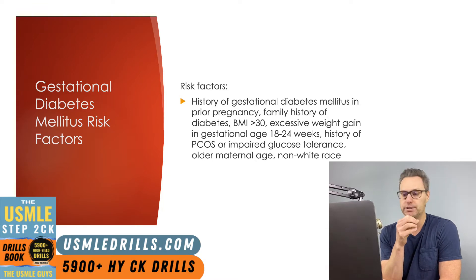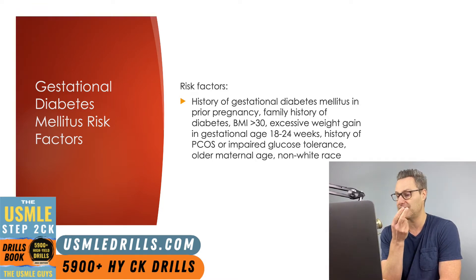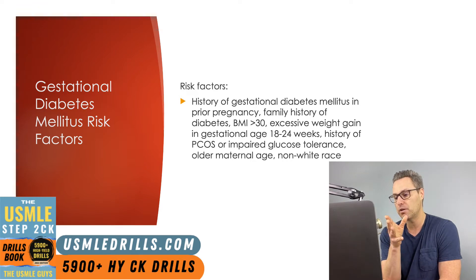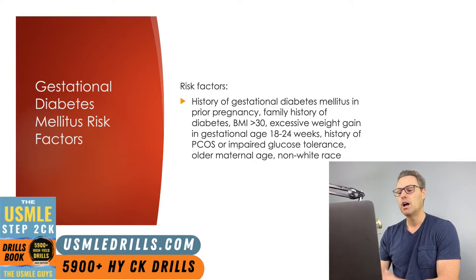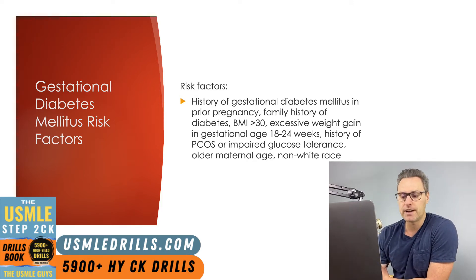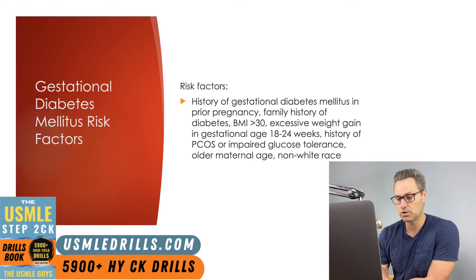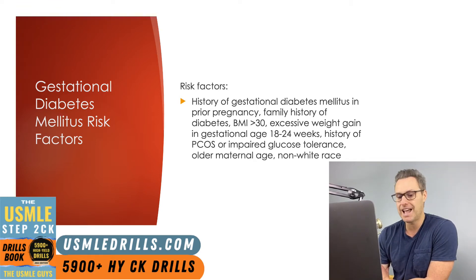Certain medical conditions like impaired glucose tolerance, prediabetes with a hemoglobin A1C between 5.7 and 6.4, or if the patient has known PCOS — all of these conditions put a patient at elevated risk. Two additional risk factors to keep in mind if they appear in a vignette are advanced maternal age and non-Caucasian ethnicity.